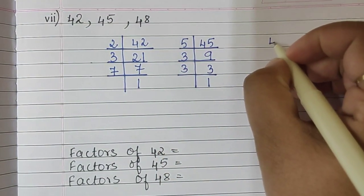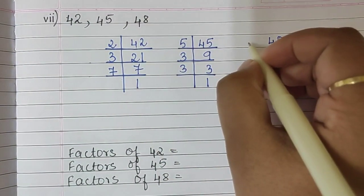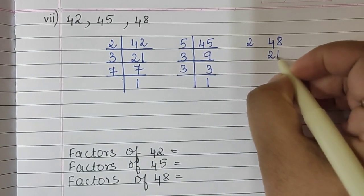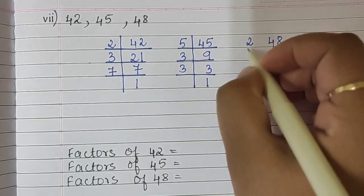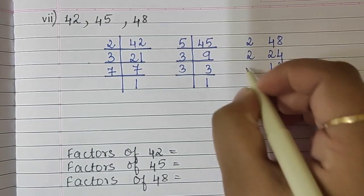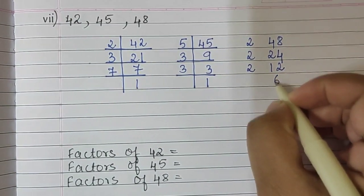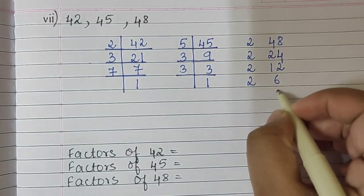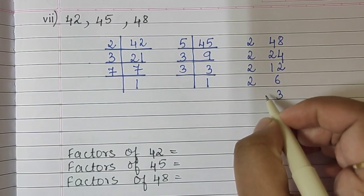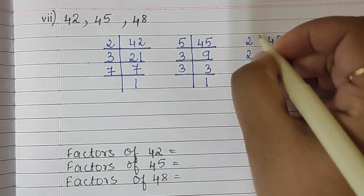And the last number is 48, which is divisible by 2. 2 twenty-fours are 48, 2 twelves are 24, 2 sixes are 12, 2 threes are 6, and 3 ones are 3.